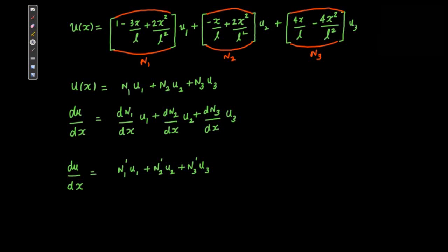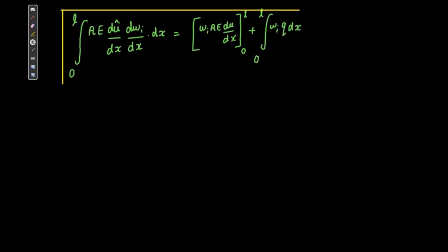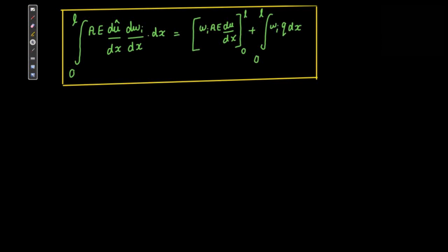Now let us look at the weak form expression of the governing differential equation of a cantilever bar subjected to uniformly distributed axial load. I can give the link for this derivation in the description below. In the weak form, what you do is reduce the order of the governing differential equation — by using some clever mathematics, you dial down the order. The left-hand side of this weak form expression will actually give you the stiffness matrix, and the right-hand side gives you the point load as well as the distributed load, meaning it gives you the force matrix.